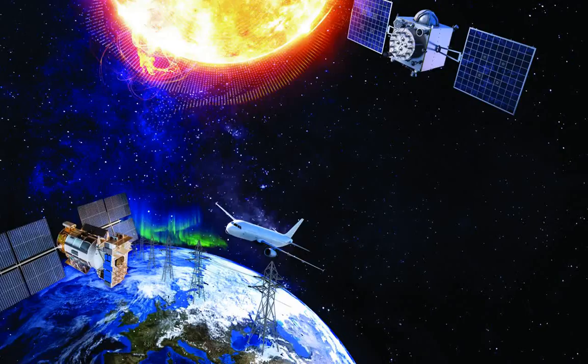Information about the field orientation only comes from the Advanced Composition Explorer, ACE, parked about 860,000 miles away from Earth. We have 30 minutes' notice whether it points north or south, in other words, whether it's harmless or trouble, Woodroff says.